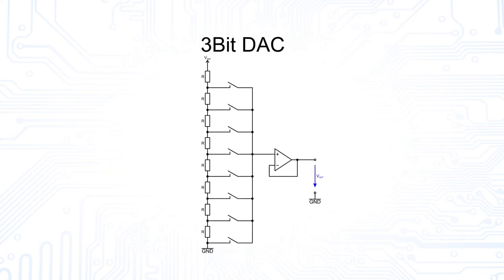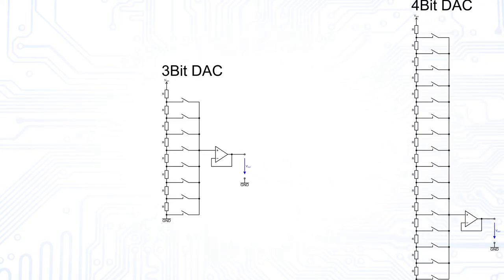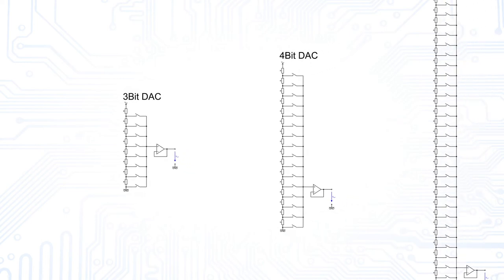Ideally, each resistor in the chain produces a voltage drop equal to 1 LSB. In a simple string DAC design, there is one pair of a resistor and a switch for each code that can be applied to the DAC. For this reason, the number of resistors and switches in the string DAC design increases exponentially with increasing resolution.